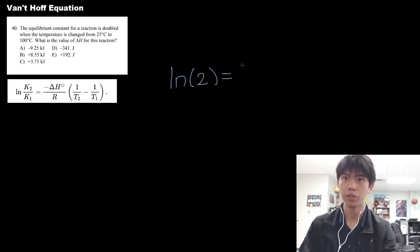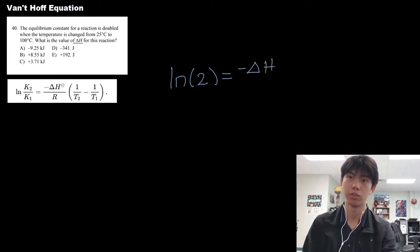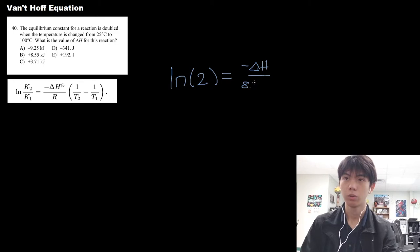We go here, it's equal to the negative delta H. And here, the question is asking for delta H, so we'll just use some algebra to isolate it later on. It's over R, and this R here is 8.314. And you multiply it by the reciprocal of the second temperature.